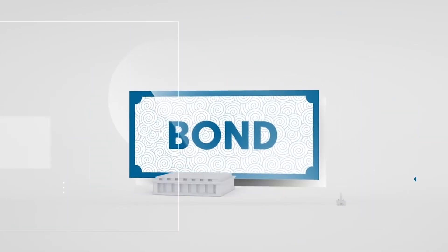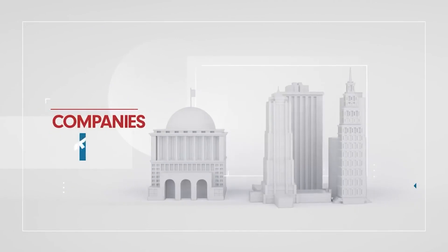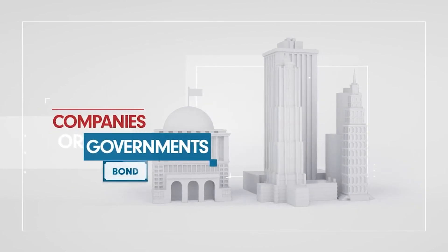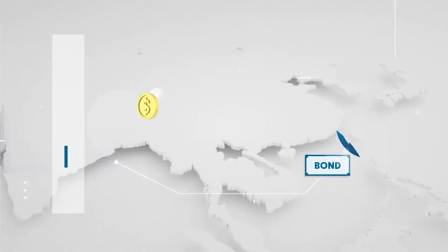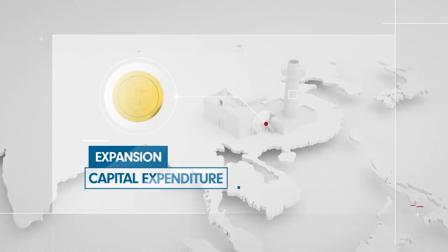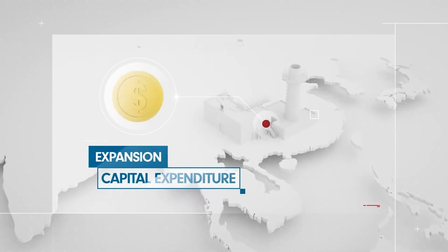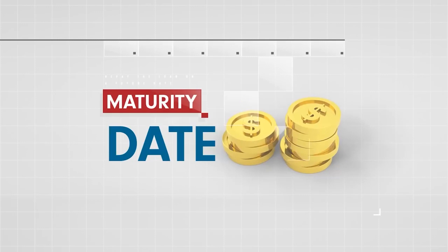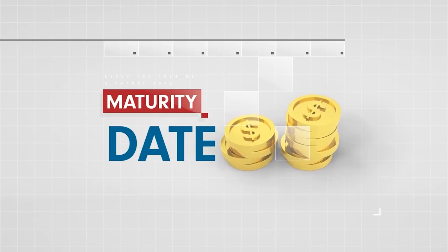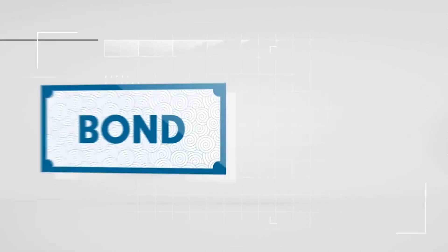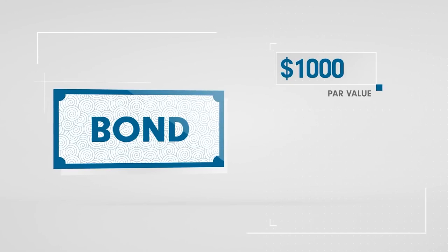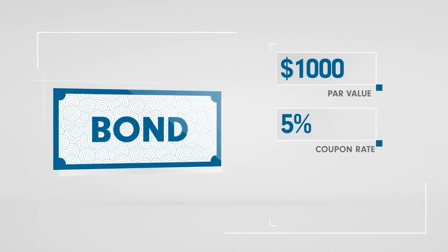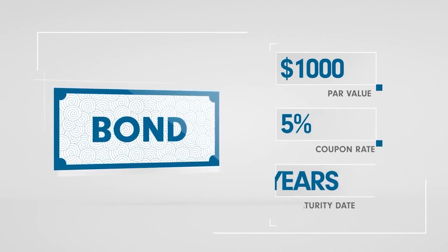Bonds are usually issued by large companies or governments as a way to borrow money from investors to fund expansion or capital expenditure. The issuer promises to repay the loan on a future date, known as the maturity date. Let's look at a bond with a $1,000 par value, a 5% coupon rate, and three years to maturity.